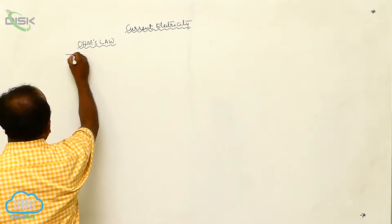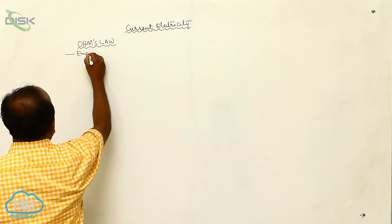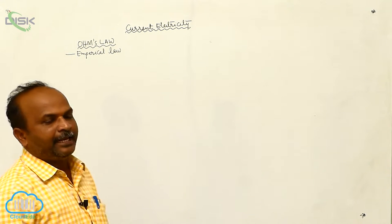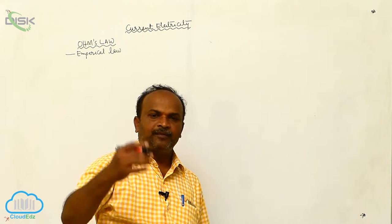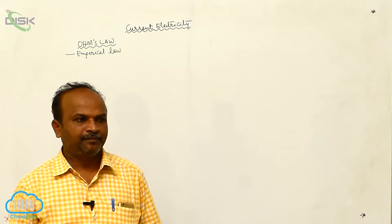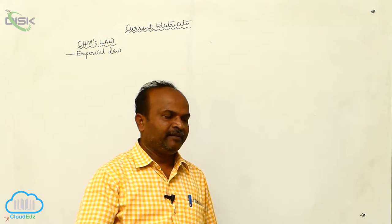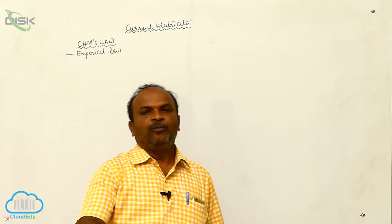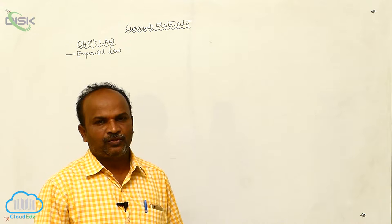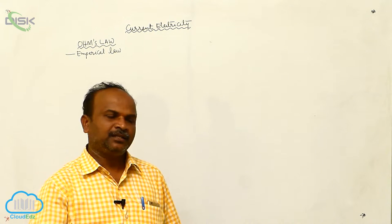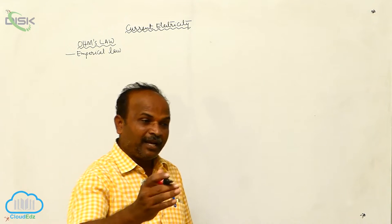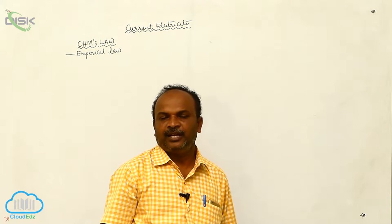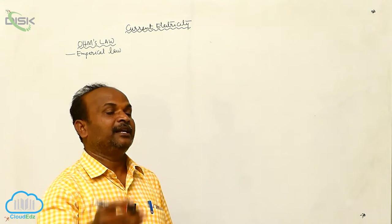Ohm's law is an empirical law. What do we mean by empirical law? There are some universal laws - the universal gravitational law, which is true at every time and every place. Coulomb's law in electrostatics is also a universal law, true at any time and anywhere. But Ohm's law is valid only in particular situations, so instead of being called a universal law, it is called an empirical law.